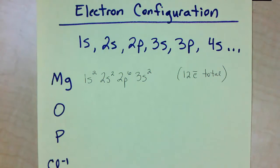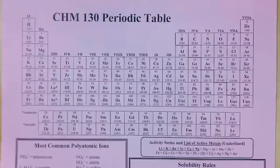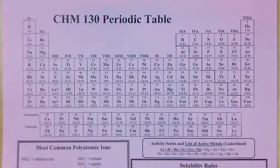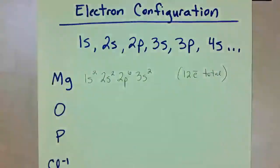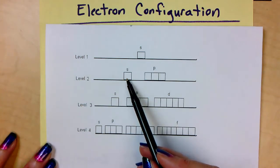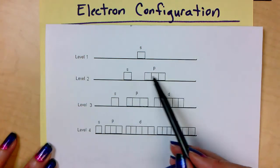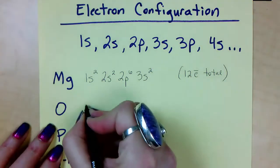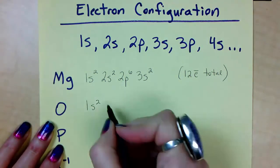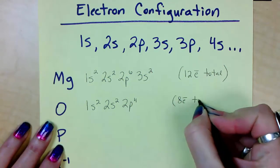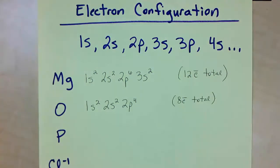Let's try oxygen. How many electrons does oxygen have? Let's find it — it's number 8. That means 8 protons, and if it's an atom, 8 electrons. We fill in: 2 go in 1s, 2 in 2s, so how many in 2p? It's not going to be full of 6 — it's going to have 4, because that makes 8. So oxygen is 1s2, 2s2, 2p4, because we have 8 electrons total. 2+2+4=8.